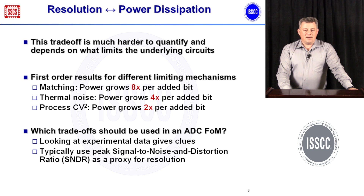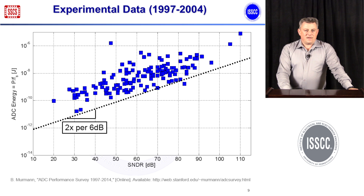To decide which trade-off to use in a practical figure of merit, we look at experimental data. I have a plot with energy on the y-axis — that is, power divided by conversion rate — and signal-to-noise-and-distortion ratio as a proxy for resolution on the x-axis. These data points correspond to conference publications between 1997 and 2004; the lower a point is, the better.